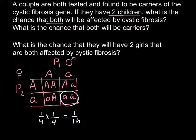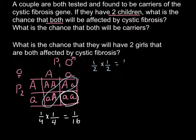Now we can move to the second question: what is the chance that both children will be carriers? As you can see, we have two out of four chances that a child can be a carrier, so we have a one-half chance. The same applies here — one-half chance for the first child and one-half chance for the second child. We just multiply these chances, and this gives us one-fourth.